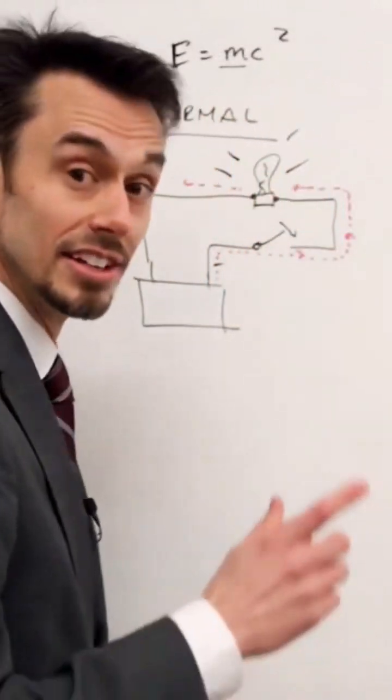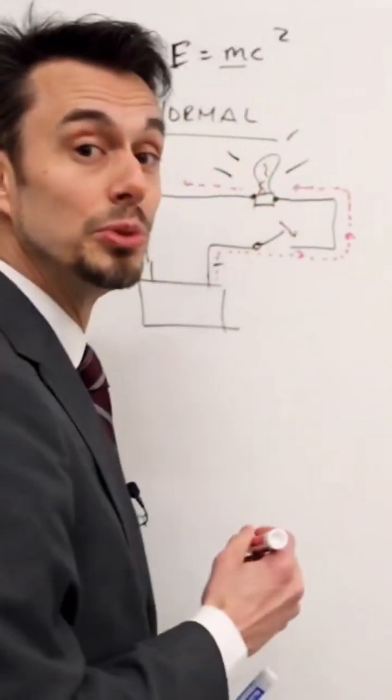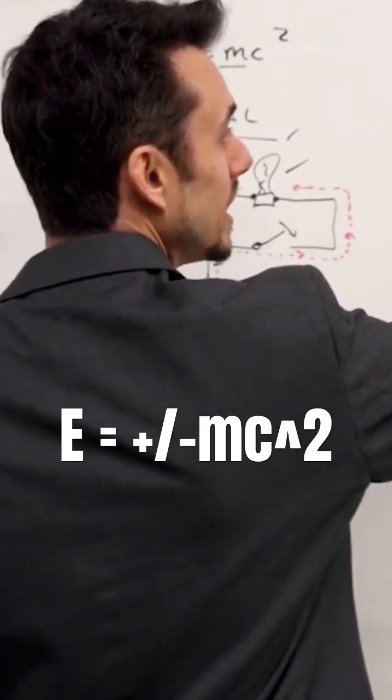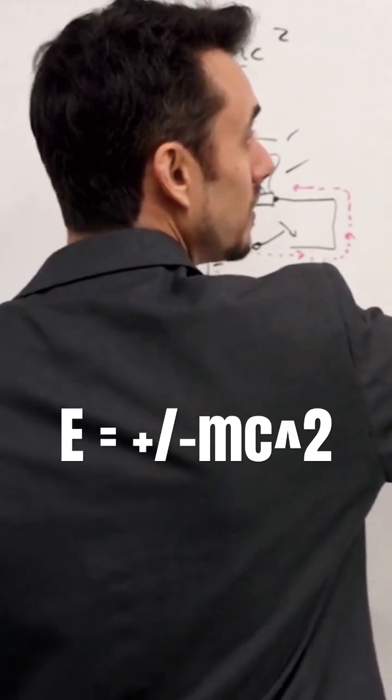Partly right, and maybe why we haven't figured this out yet until now, because here's the real equation: E equals plus or minus mass times the speed of light squared.